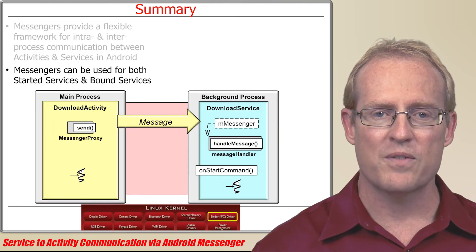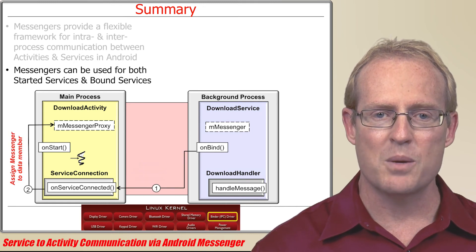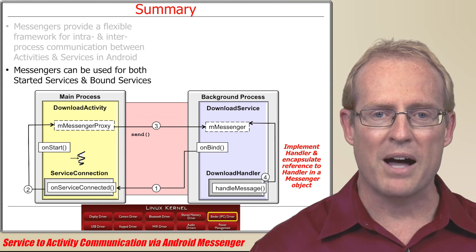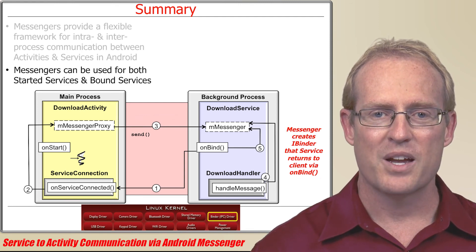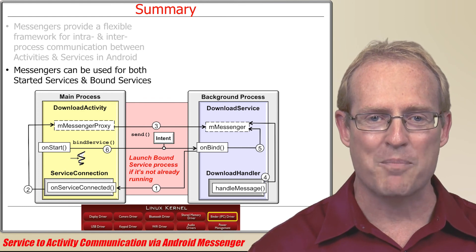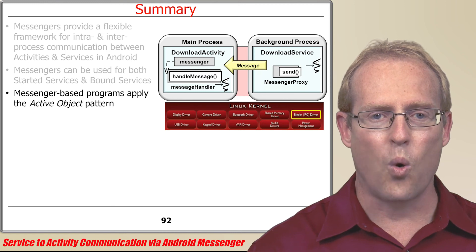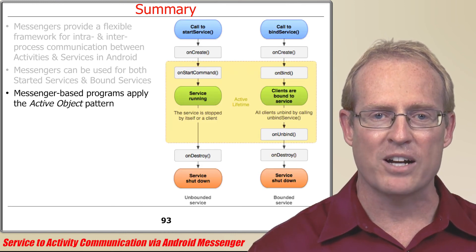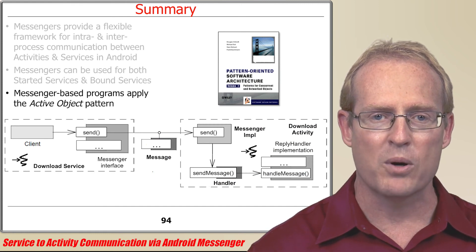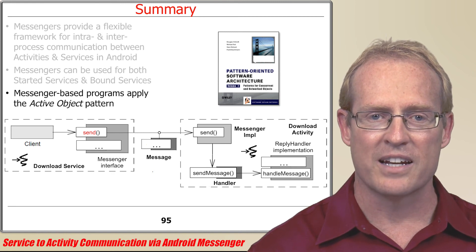Although we focused on how a started service can use a Messenger to reply back to an activity, it's also possible for a bound service to create a Messenger that a client activity can use to pass messages to it. In this variant, the bound service creates a Messenger that encapsulates a handler, then returns a reference to that Messenger via the service's onBindFactory method, which is invoked automatically by the Android service framework when an activity calls bindService with an intent associated with that bound service. Regardless of whether Messengers are used for activity-to-service communication, service-to-activity communication, or communication with bound or started services, they implement a variant of the active object pattern, which defines the units of concurrency on a component to be requests for service — in this case, the send method calls on a Messenger reference. This pattern allows service requests to be handled in a different thread or process than the client thread that invoked the requests.